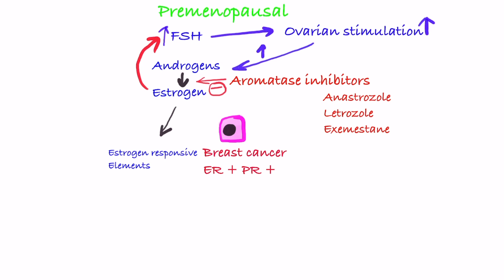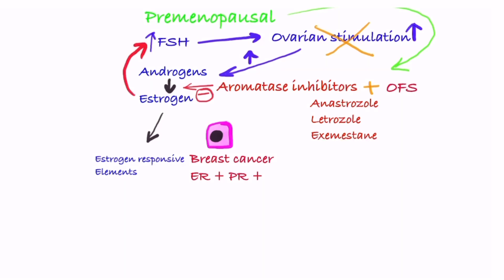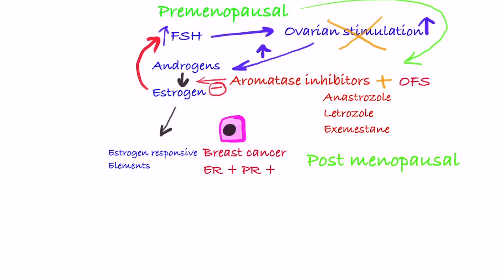If the ovaries are removed, then aromatase inhibitors can be given — this is called ovarian function suppression. If aromatase inhibitors are to be prescribed to premenopausal women, ovarian function suppression must be done, either by surgically removing the ovaries via bilateral oophorectomy or by ovarian radiation, which destroys the ovary. In postmenopausal women, aromatase inhibitors can be given alone.